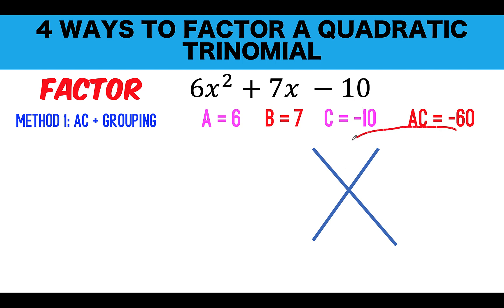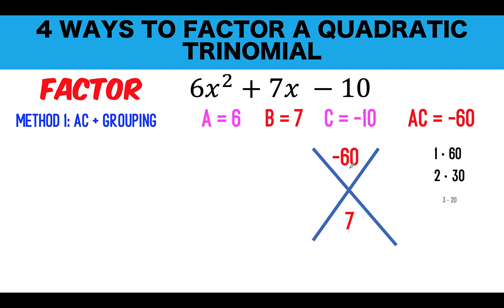We put negative 60 here and B, which is equal to 7, here. Now let's find factors of negative 60. You need to find factors such that when you multiply, the result is negative 60, and when you add, the result is positive 7. Since the product is negative, one of the factors must be negative and the other positive. Which combination results in positive 7 when added?